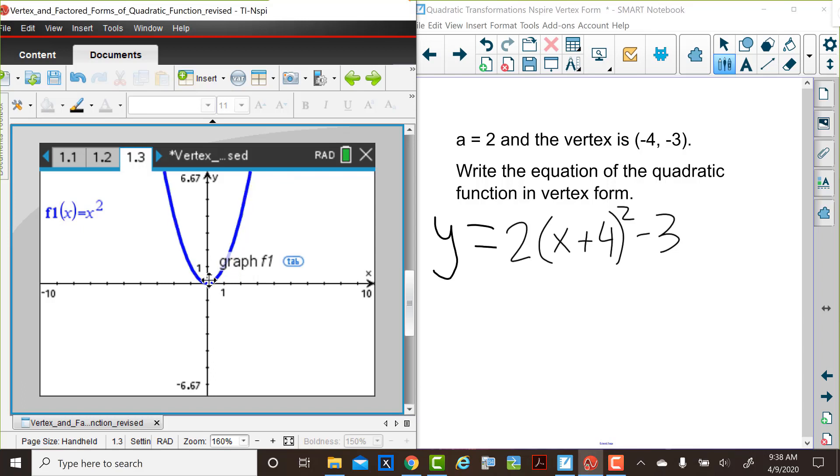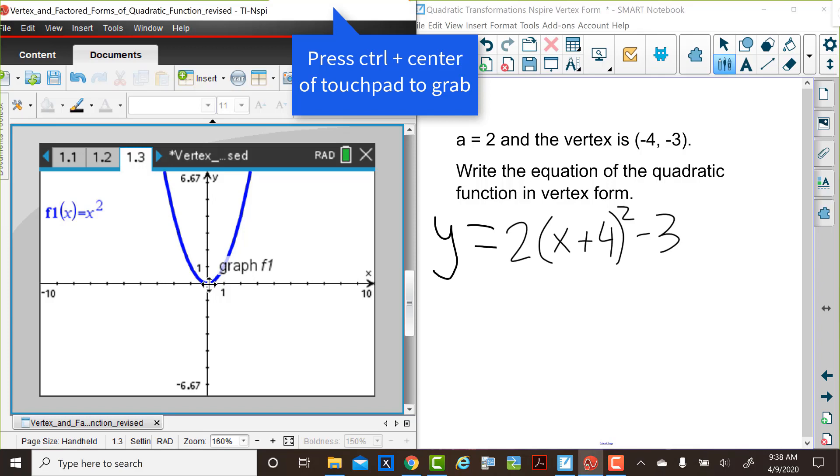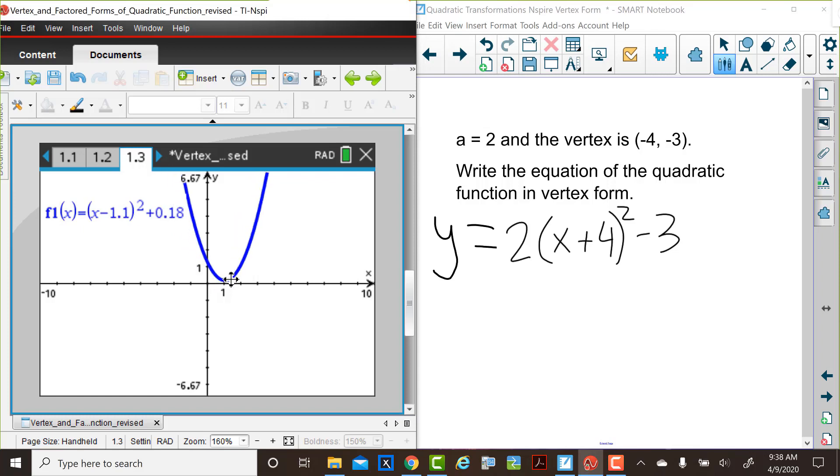If you move the cursor very close to the vertex, you'll see a very small four-way arrow. You can grab that function, grab in quotation marks, and move it from left to right or up or down. And see our horizontal and vertical translations, and also see the equation update with these translations. You may press Escape to drop the parabola at any location or to drop the graph.